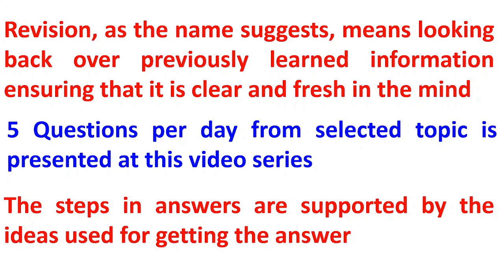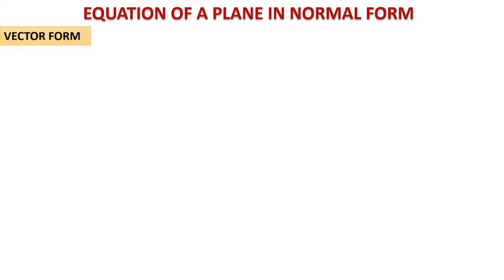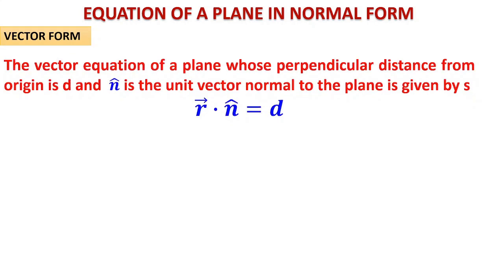Let us first see the equation of a plane in normal form. Normal always refers to a perpendicular line. In vector form, the vector equation of a plane whose perpendicular distance from the origin is d, and where n-hat is the unit vector normal to the plane, is given by r dot n-hat equals d. Here, vector r is the position vector of any general point, xi plus yj plus zk, and this vector n must be a unit vector.